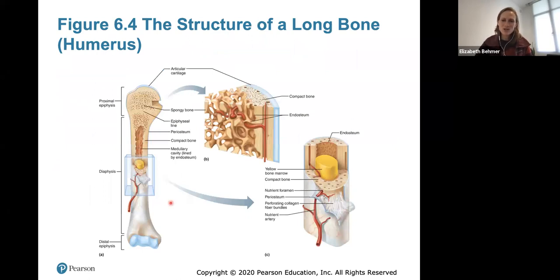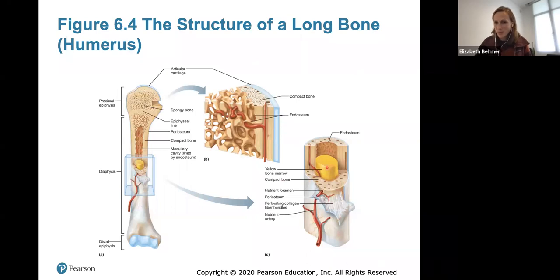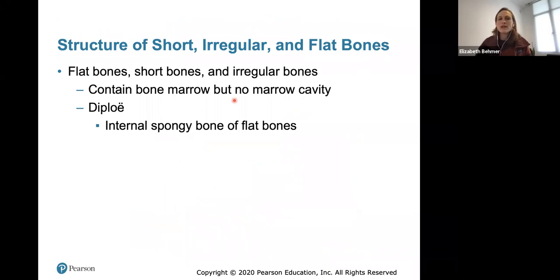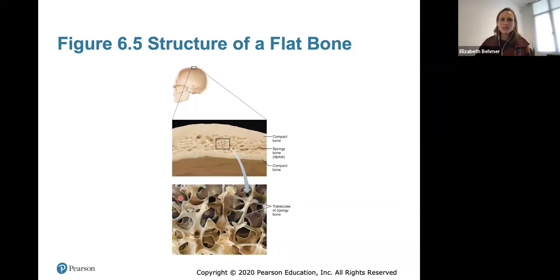Here's a look at the structure of a long bone — you should know this well for both lecture and lab. The epiphyses at the proximal and distal ends are covered with articular cartilage, providing a sliding surface. The diaphysis contains the medullary cavity filled with yellow bone marrow, which stores fats and lipids. Compact bone surrounds the bone surfaces, and the periosteum covers the exterior. Flat, short, and irregular bones contain bone marrow but no marrow cavity — their internal spongy bone is called the diploë.